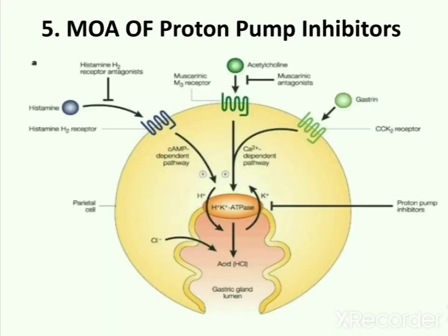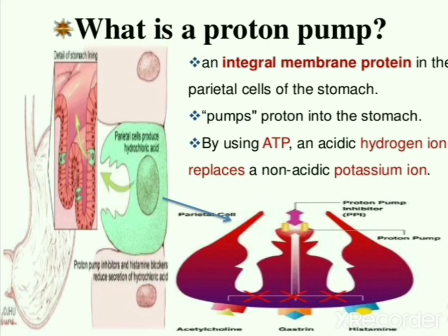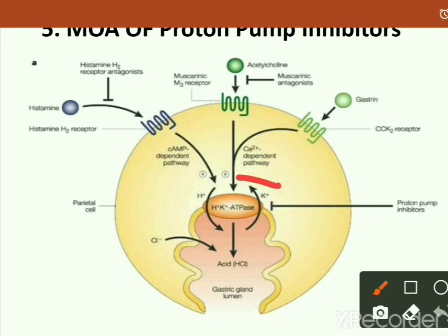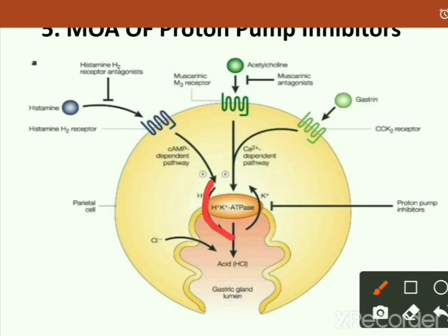Next category is proton pump inhibitors. Before starting the mode of action of proton pump inhibitors, we have to understand what a proton pump is. Proton pump is an integral membrane protein in the parietal cells of the stomach that pumps protons into the stomach. By using ATP (adenosine triphosphate), an acidic hydrogen ion replaces a non-acidic potassium ion. The H+/K+ ATPase is the proton pump — it influxes H+ ions and effluxes K+ ions. H+ ions combine with Cl- ions and produce HCl.